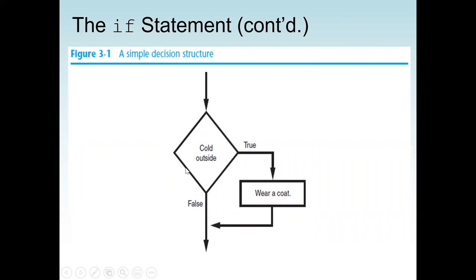Here is a simple flowchart example for a decision structure. In the diamond symbol we have the condition: is it cold outside? If it's true, then we execute the statement to wear a coat. But if it's false, we exit the structure. So if the condition is true, we put on a coat; if the condition is false, we don't need to put on a coat.